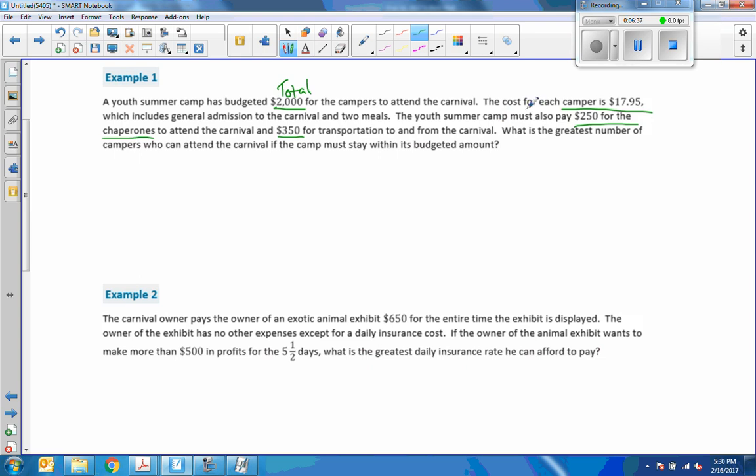So this is our total. This is the cost for each is the key word here. So it's $17.95 for each camper. I'll call C. They also must pay $250 for a chaperone, $350 for transportation. Those are both constants. So I'll circle these, draw a line over here like this, and they are constants. It doesn't say $250 for each chaperone. I said it's for all the chaperones. And we're only going to take one bus. It doesn't say for each of us we need $250. So they're constants, they don't change. So we're going to take that $17.95 times however many campers there are at our expenses, which is $250 for the chaperones plus $350 for the transportation. And that has to be less than for you. We can't go over budget because that is $2,000.